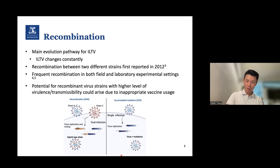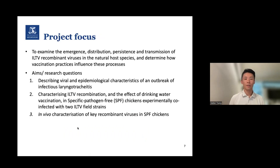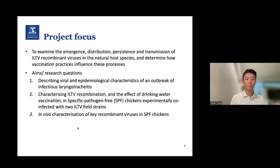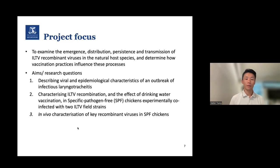To summarize, my project focuses on examining the emergence, distribution, persistence, and transmission of ILTV recombinant viruses in the natural host species — chicken — and determining how vaccination practices influence these processes. There are three main aims. The first is to describe the viral and epidemiological characteristics of an outbreak of infectious laryngotracheitis. The second is to characterize ILTV recombination and the effect of drinking water vaccination in SPF chickens co-infected with two ILTV field strains. Aim three is the in vivo characterization of key recombinant viruses in SPF chickens.